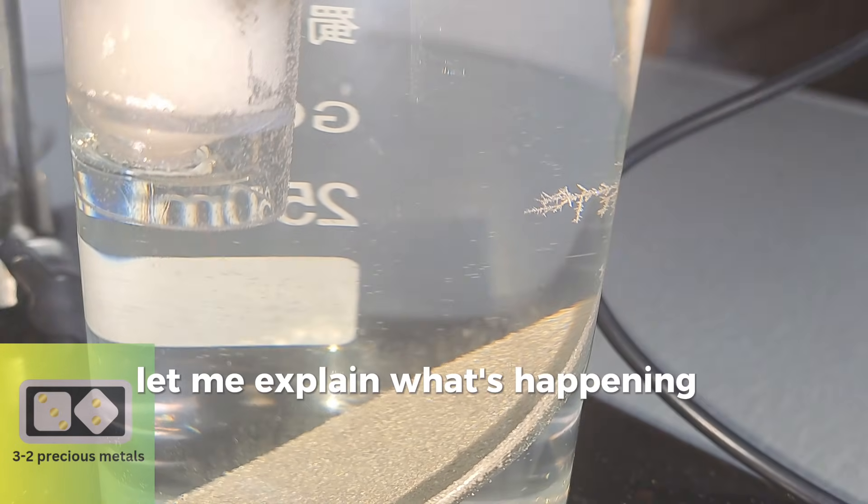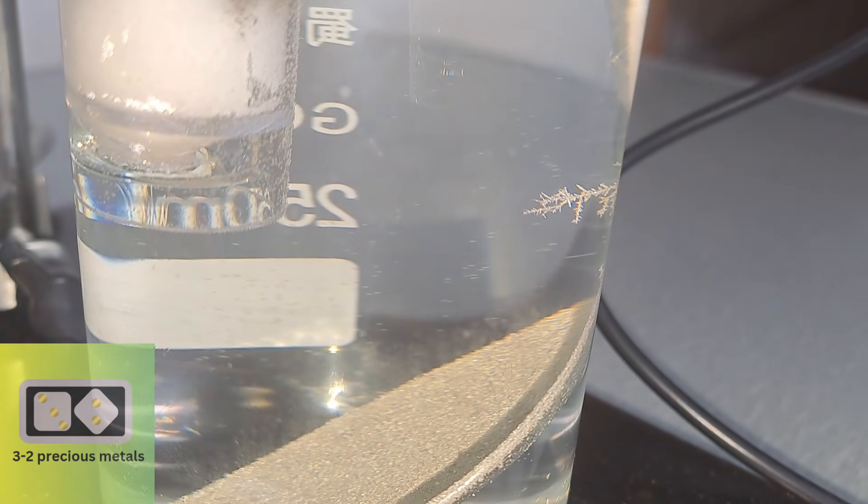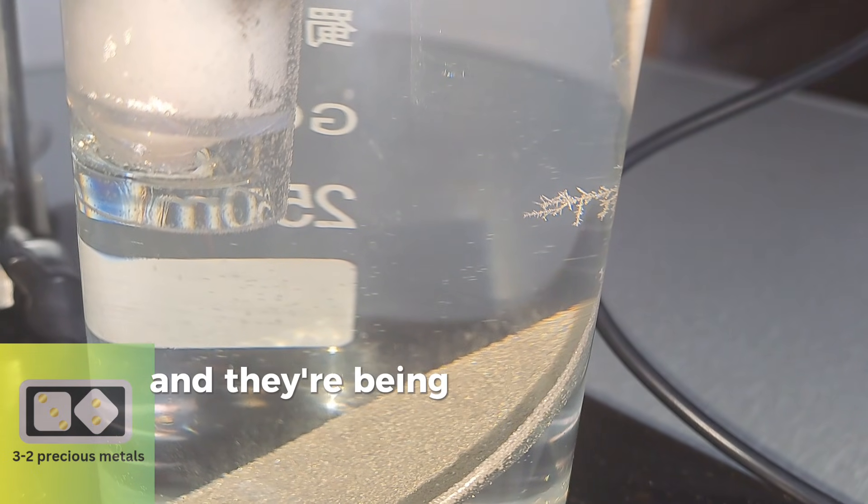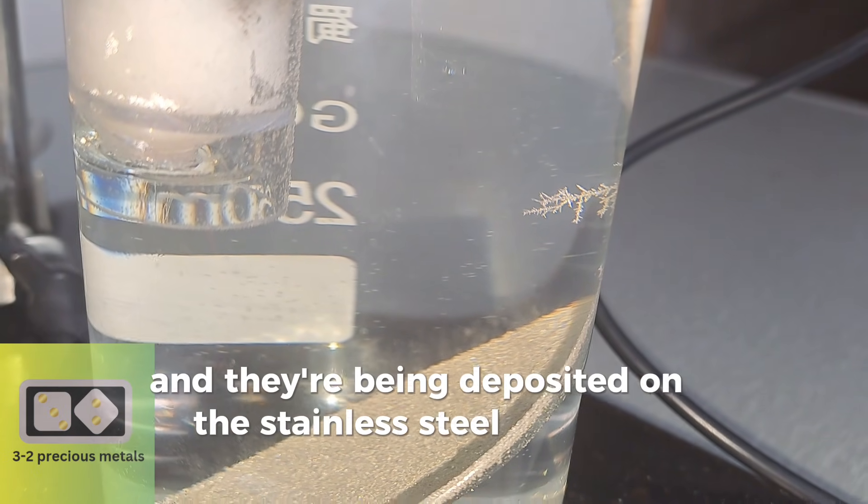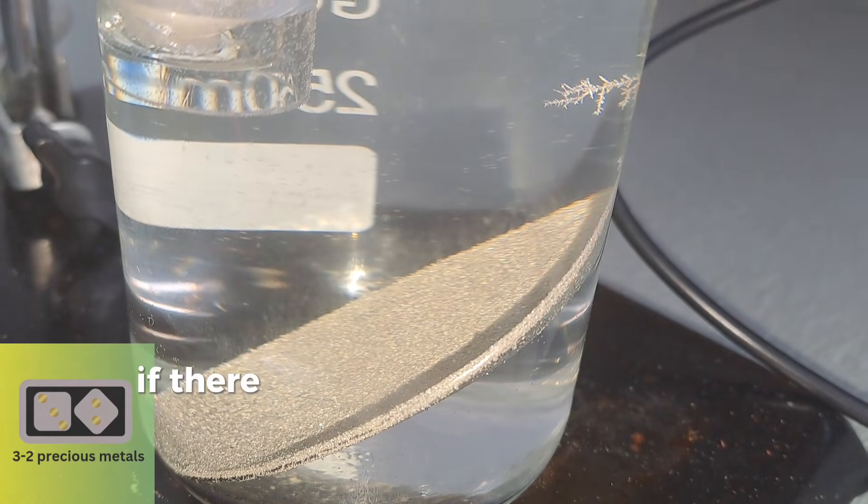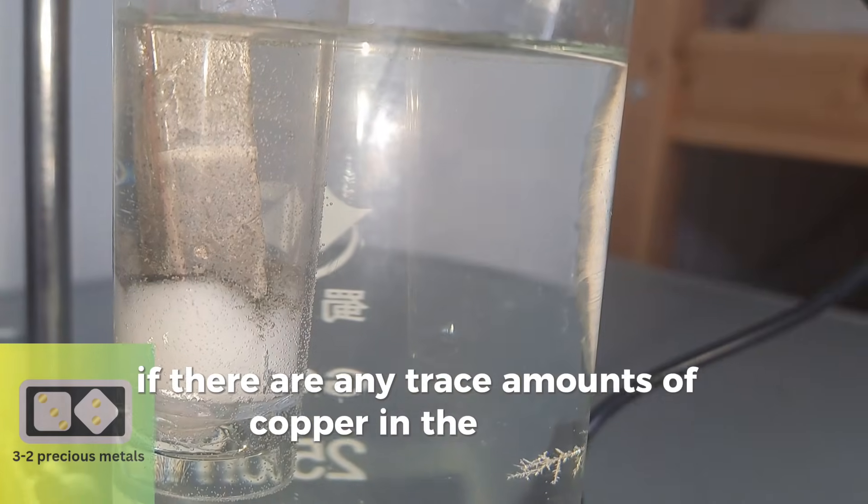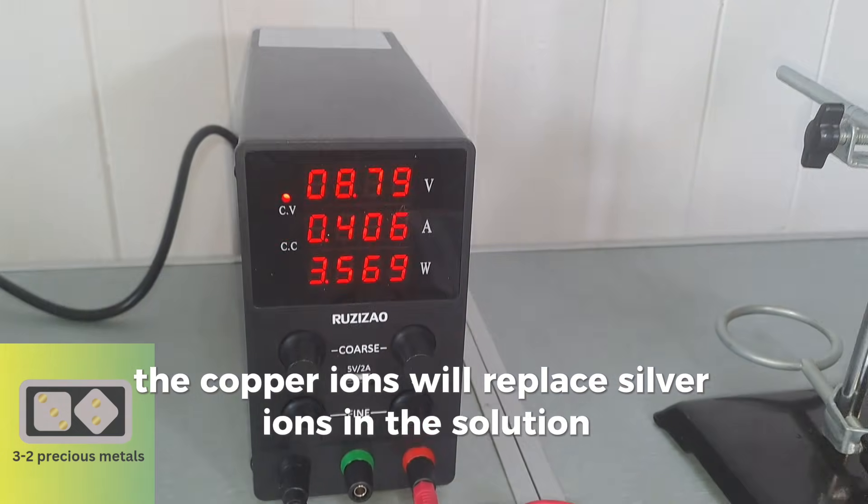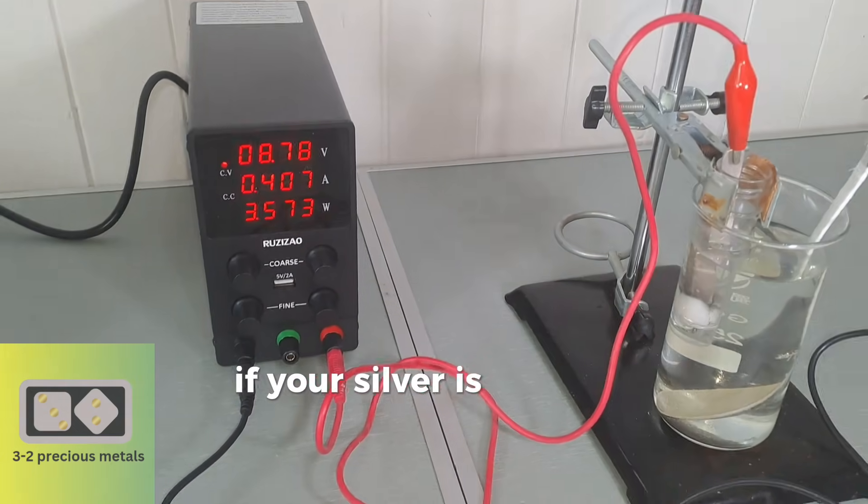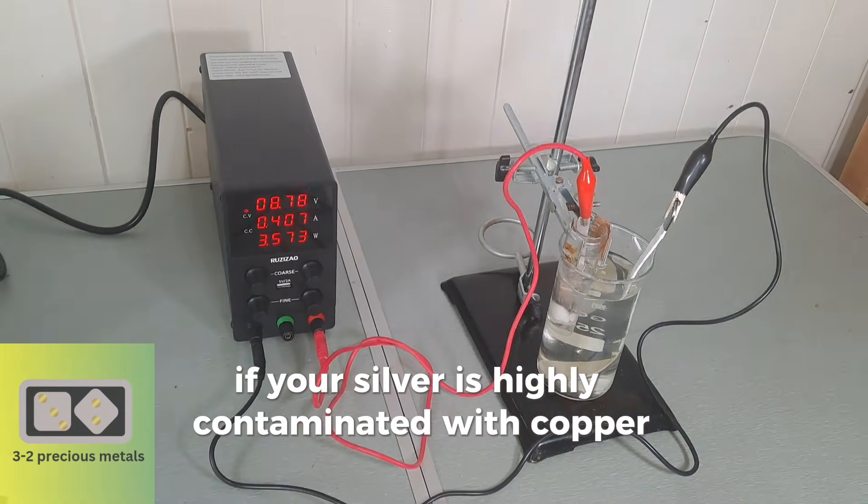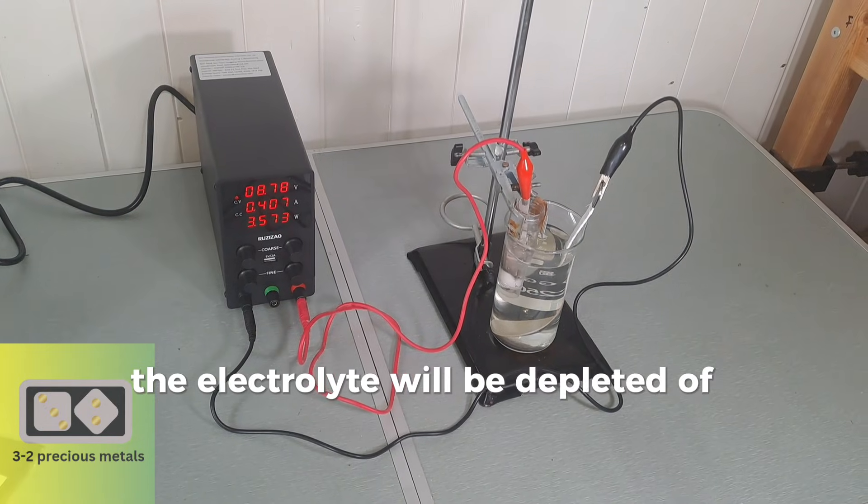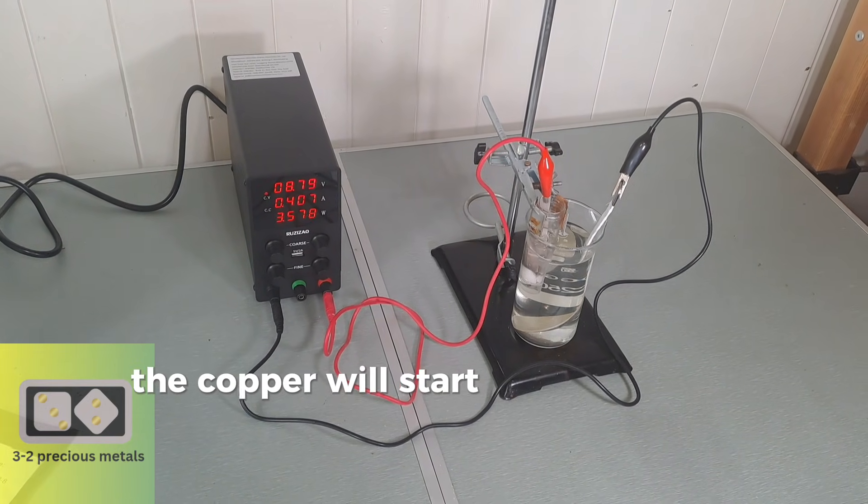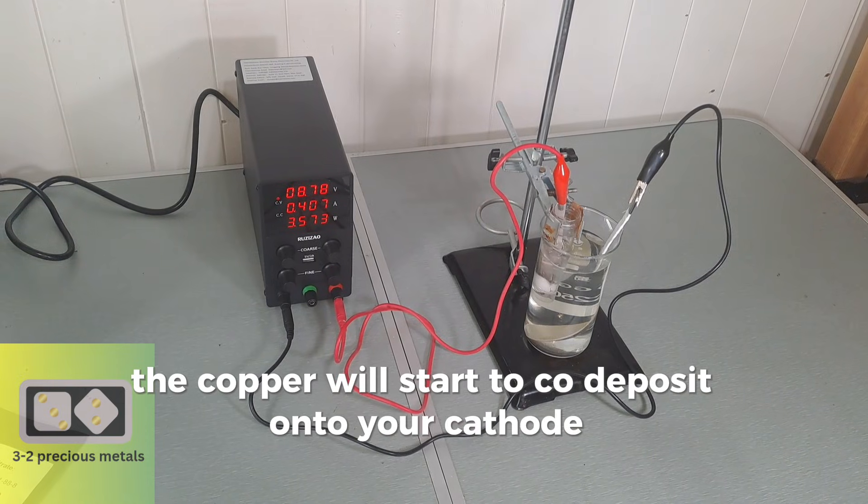Let me explain what's happening in this reaction. The silver ions are being taken from the silver anode and they're being deposited on the stainless steel cathode. If there are any trace amounts of copper in the anode, the copper ions will replace silver ions in the solution. If your silver is highly contaminated with copper, the electrolyte will be depleted of silver very quickly and once saturated, the copper will start to co-deposit onto your cathode.